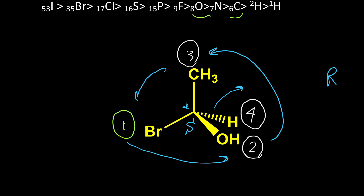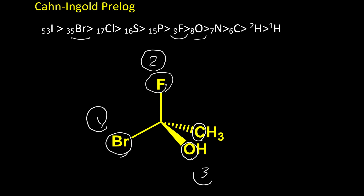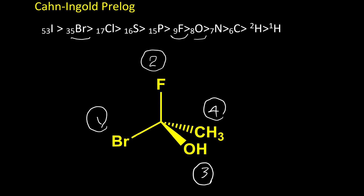Let's have a series of examples to see how we can identify configuration in more complex molecules. Here is a second example: between bromine, fluorine, oxygen, and carbon. Bromine has the highest priority, so it's number one. Then fluorine is number two. Then oxygen is number three. And carbon is number four. Again, number four is in the back of the molecule and we don't need to do anything. Then we move to step three: from one to two to three — this rotation is clockwise. So in this example, configuration is R.